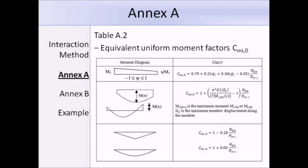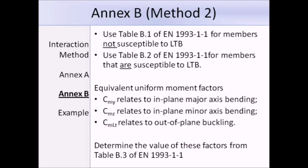I'm now going to talk about the second method, which uses Annex B. Method 2 makes use of Annex B, and for members not susceptible to LTB, we need to use table B.1, whereas for members that are susceptible to LTB, we need to use table B.2. Again, we have these equivalent uniform moment factors, CMY, CMZ, and CMLT, and we get those from table B.3.